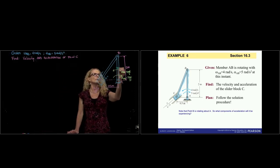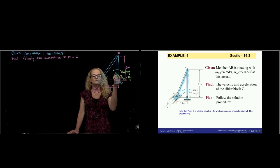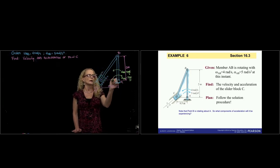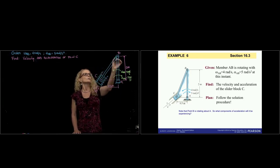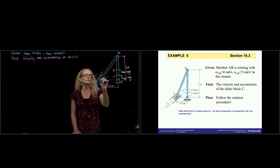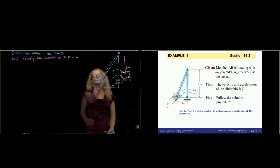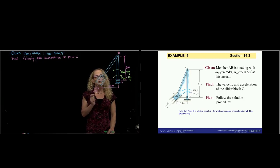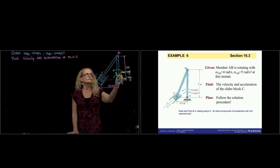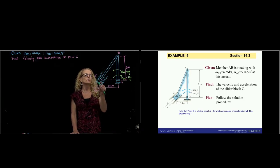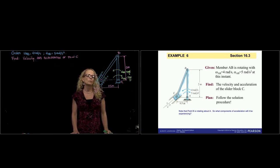In this problem, we have a bar fixed to ground by a pin at A. The pin allows the bar to rotate about that point. We have another bar fixed to bar A at point B and fixed to a block that is only permitted to slide over a guide. We know the angular velocity and the angular acceleration of bar AB, and we know the trajectory of the motion of point C.